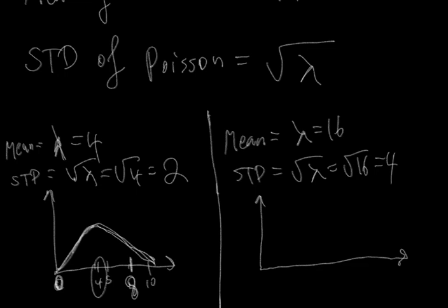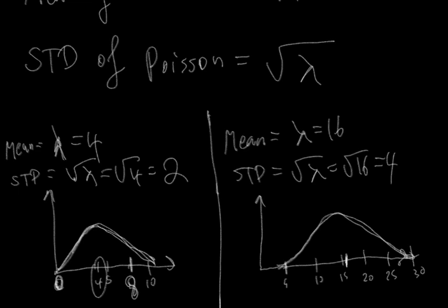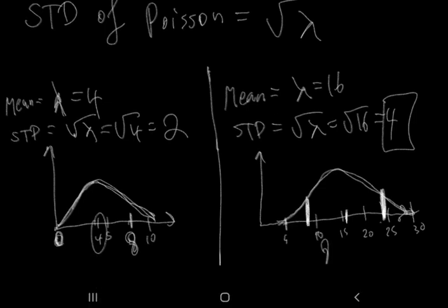This distribution looks roughly normal, centered at 16. With values at 5, 10, 15, 20, 25, 30, the distribution is normally distributed around 16. The standard deviation is now 4, so two standard deviations to the left of 16 is 8, and two standard deviations to the right of 16 is 24. Notice that's now an 8-unit difference on either side.